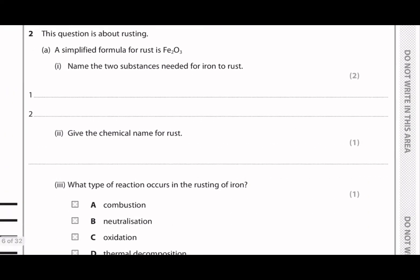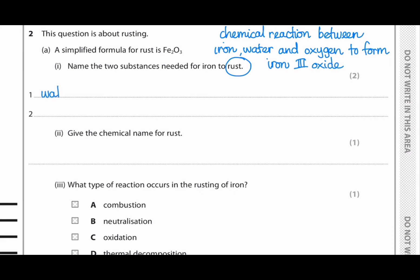That's all of question one. And question two asks about rusting. The simplified formula for rust is Fe2O3. And they ask you to name the two substances needed for iron to rust. So the process of rusting is a chemical reaction between iron, water, and oxygen to form iron 3 oxide. And the experiment that people usually do is to put an iron nail into a tube of water for them to react. Based on the definition, the two substances we can write here are water and oxygen. Or you can also write air for oxygen.